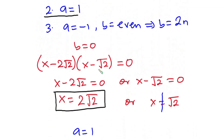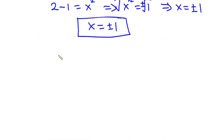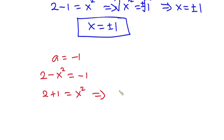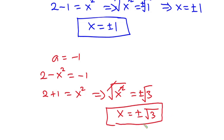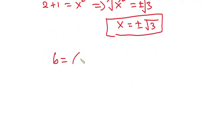Now let's consider the third case, where a equals negative 1 and b is even. If a equals negative 1, then 2 minus x² equals negative 1. Making x² the subject, 2 plus 1 equals x², so x² equals 3. Taking the square root on both sides, x equals plus or minus √3. Now let's substitute this into the exponent b, where b equals (x minus 2√2)(x minus √2).